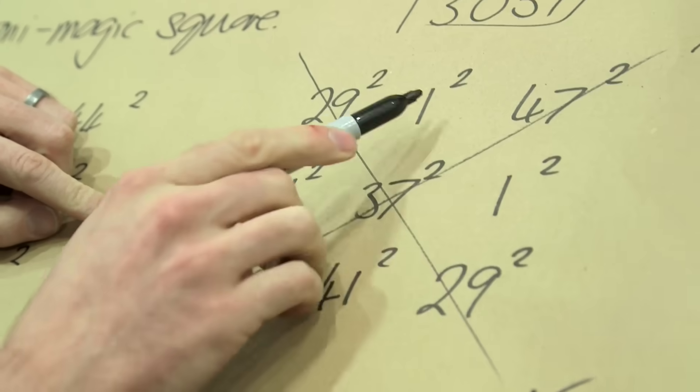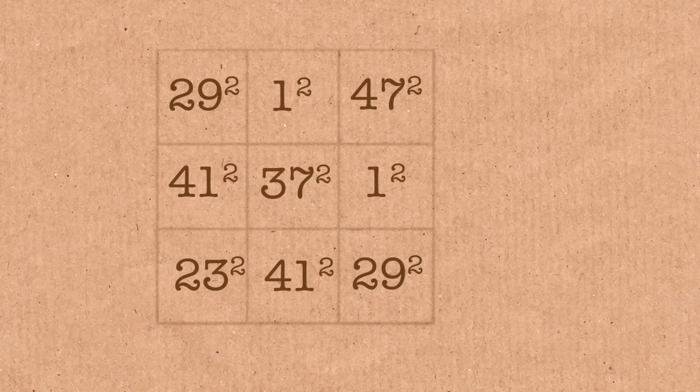Also, as you may have spotted, some numbers are in there more than once. So you see there's two 41's, there's two 29's, there's two 1's.